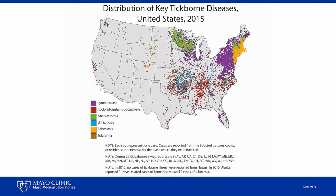This map from the Centers for Disease Control and Prevention, or CDC, shows the distribution of key tick-borne diseases reported in 2015. I like this map because it nicely demonstrates where the main clusters of disease are, as well as the overlap of many tick-borne diseases. It also shows how there are a smattering of cases outside of the main clusters. Although our focus will be on the main areas of tick-borne disease, it's important to keep in mind that cases can occur outside of these areas.